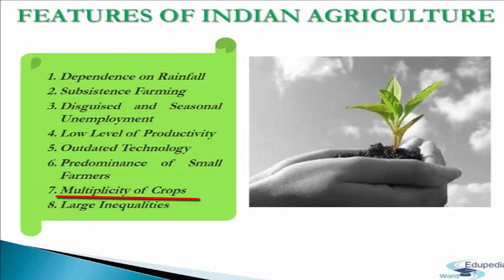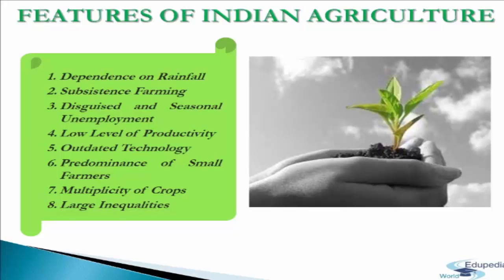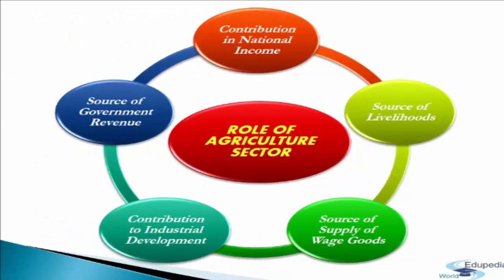The next feature is multiplicity of crops. Due to large variations in climate and soil conditions, farmers produce many types of crops. The most significant aspect of this is the predominance of food crops, covering around 70% of the area under cultivation. The last feature is large inequalities — there are major disparities in the size of farming, resulting in large income inequalities among small and big farmers.